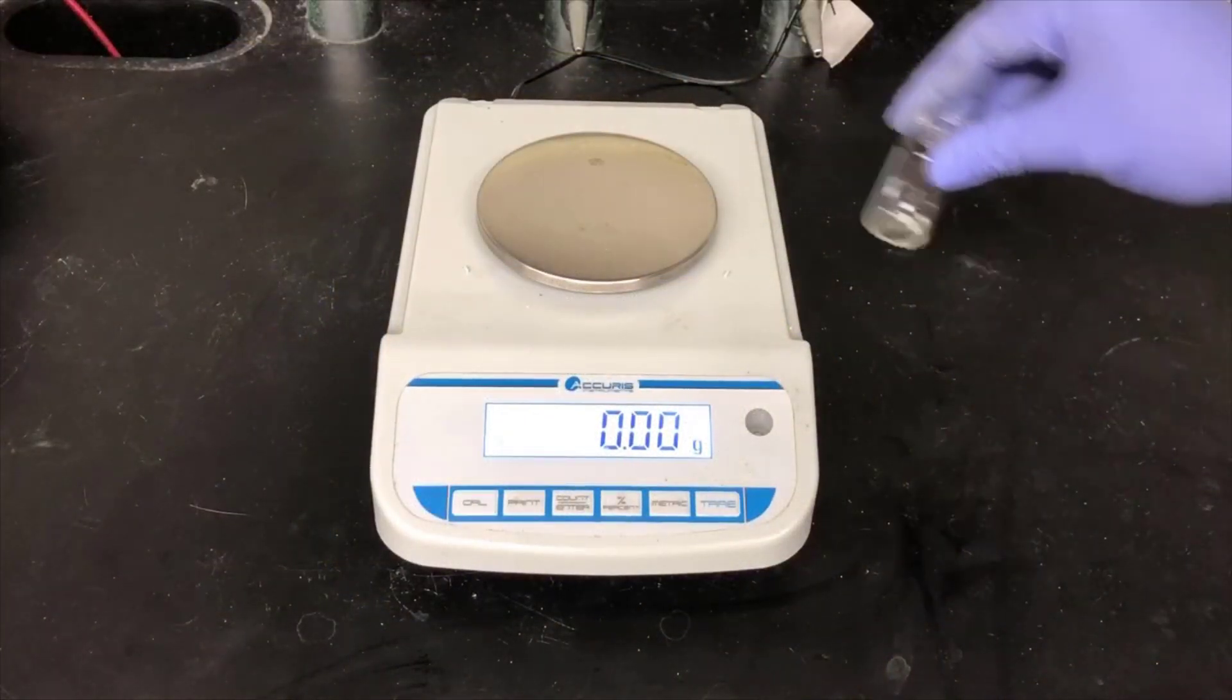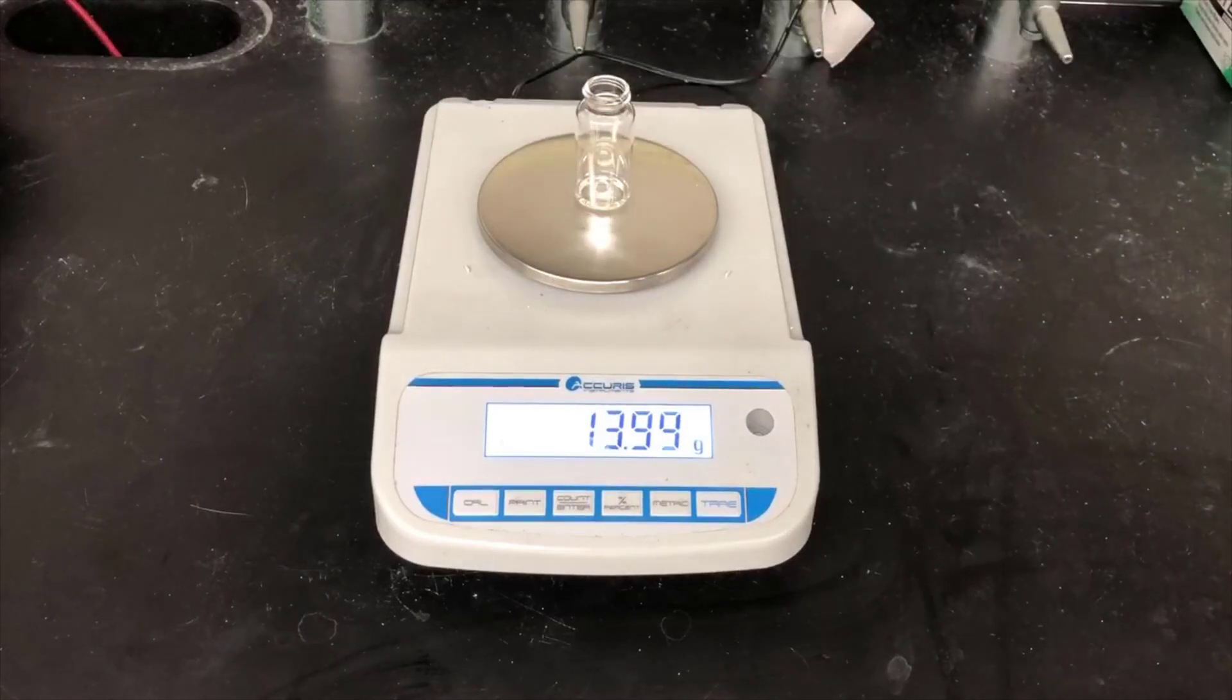Now I'm weighing the vial that contains the product. I can subtract the mass of the empty vial from before to get the weight of the product by difference.